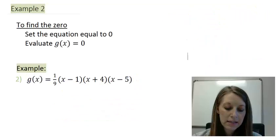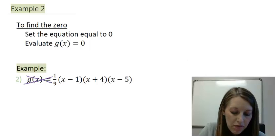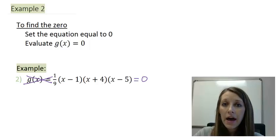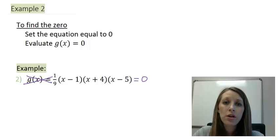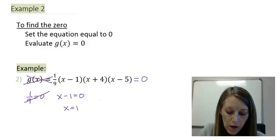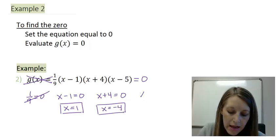Let's see a second example of finding the zeros of an equation. Again, the whole process is ignoring the name of the function and setting the whole function equal to zero. This one is actually really easy — much easier than the last one — because it's already in factored format, so you don't even have to do any factoring work. You just set each factor equal to zero: 1/9 equal to zero doesn't make sense, so I throw it away. x − 1 = 0 gives x = 1; x + 4 = 0 gives x = −4; and x − 5 = 0 gives x = 5.